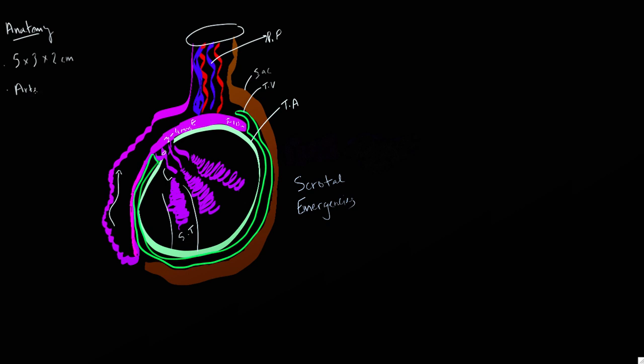The arterial supply to the testicle is via a bunch of vessels, predominantly the testicular arteries that arise off the aorta distal to the renal arteries. These travel in the spermatic cord, go inside the tunica albuginea as the capsular arteries, and radiate inwards as the centripetal arteries. There's additional blood supply from the cremasteric arteries that arise from the inferior epigastric arteries, as well as the deferential artery, which arises off the superior vesicular artery from the internal iliac vessels. Waveforms within the testicle are low resistance, with good flow throughout systole and diastole, with studies showing a mean resistive index of 0.6.